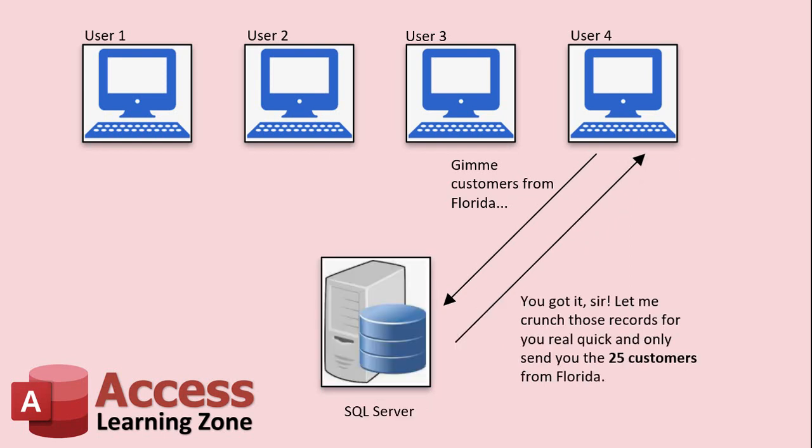If you have a database server like SQL Server, it is smart. It can take a request, crunch through all those records on its side — all ten thousand, a hundred thousand, whatever records you've got — figure out here are the 25 customers from Florida, and send you just those. It's a lot faster because only those 25 records have to go across the network, and that's one of the major benefits of a database server.